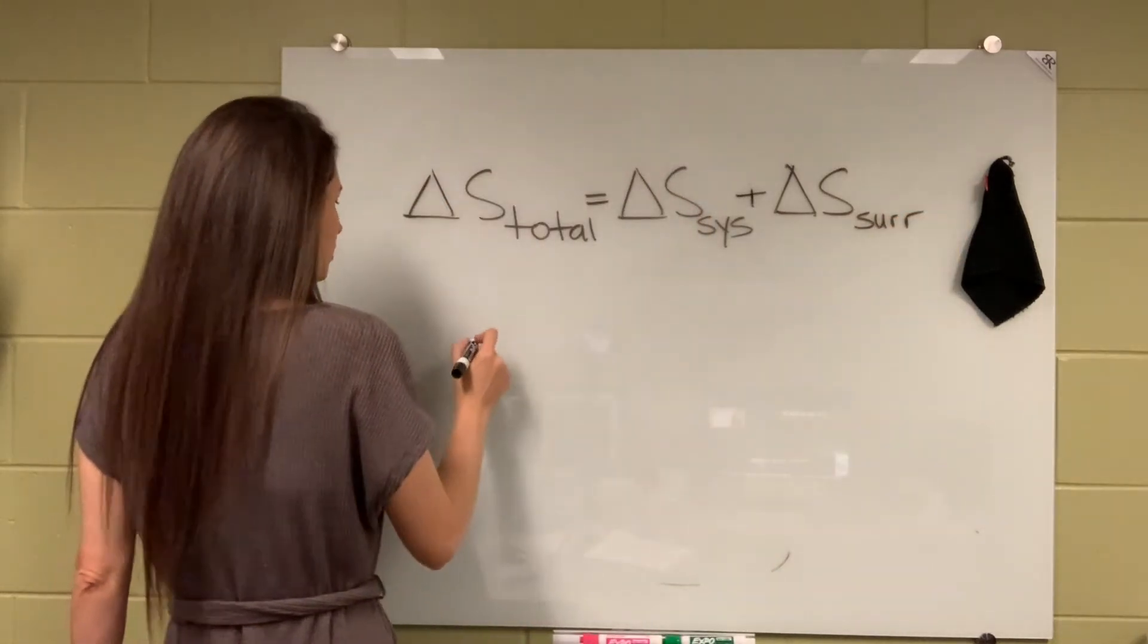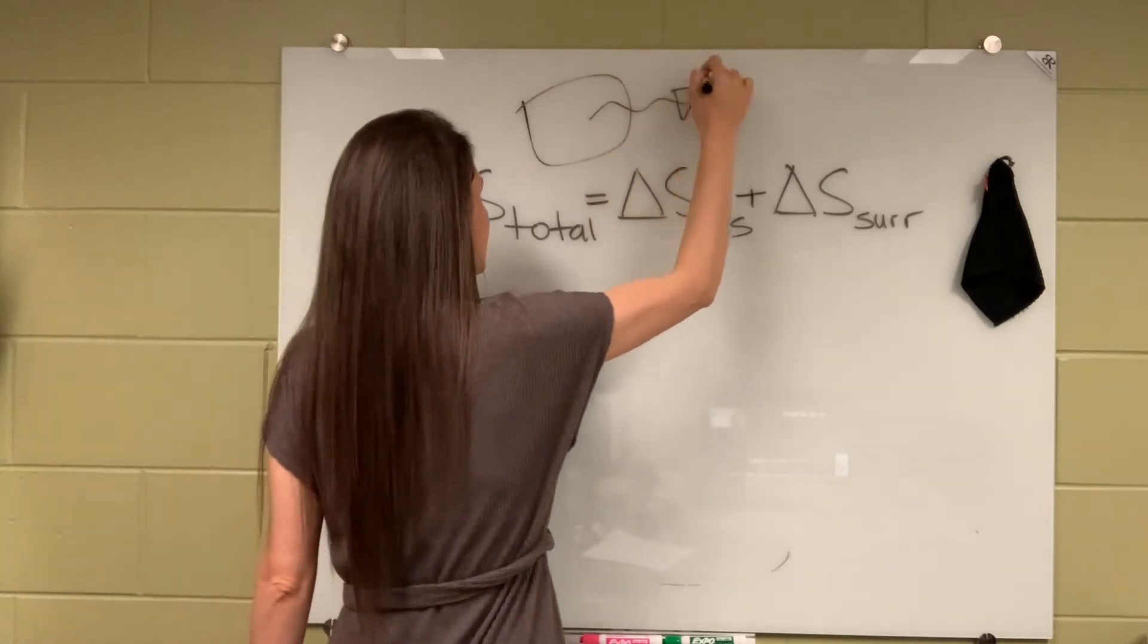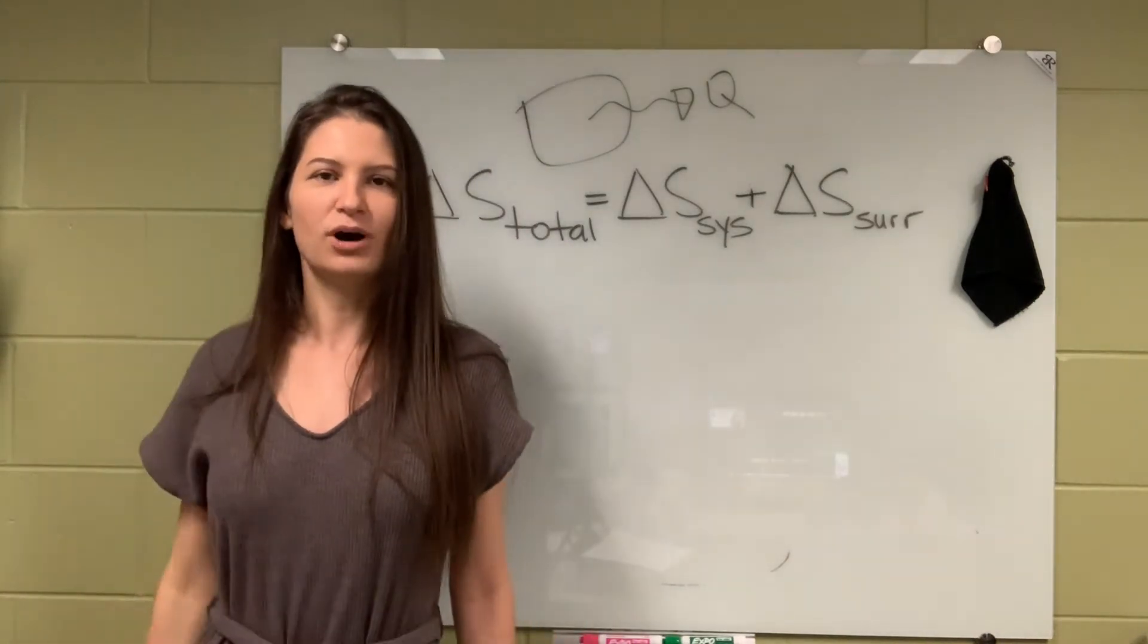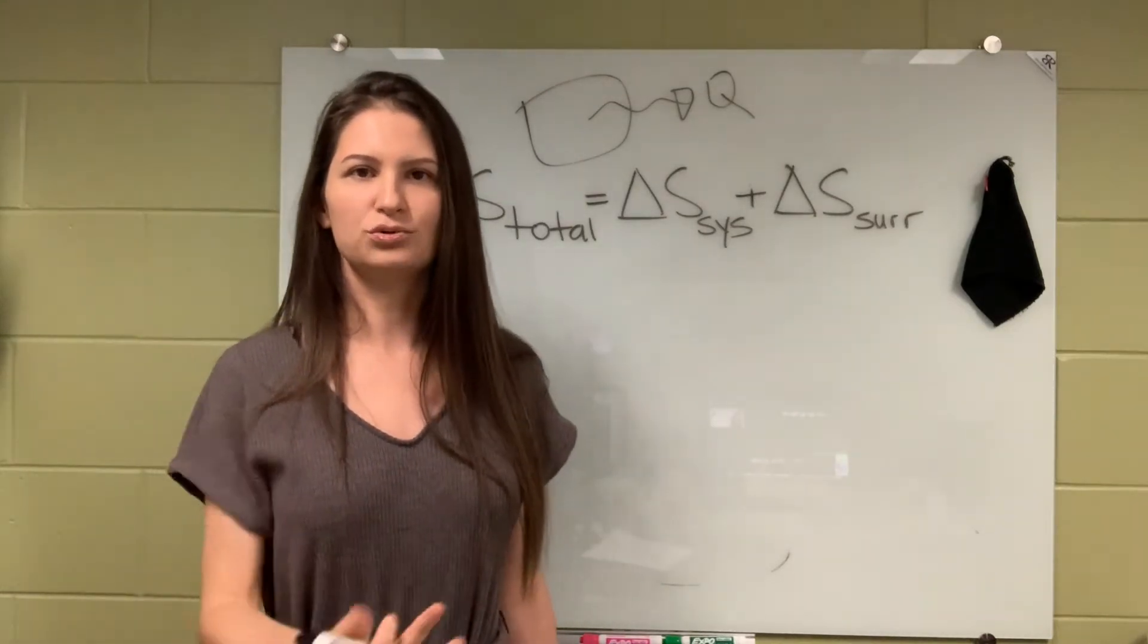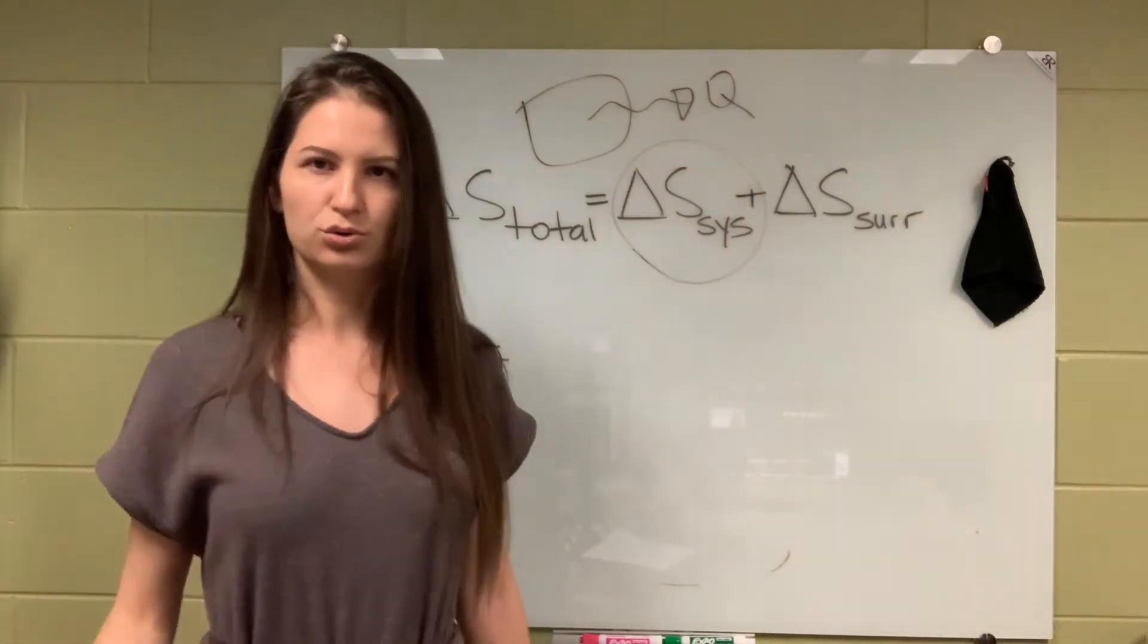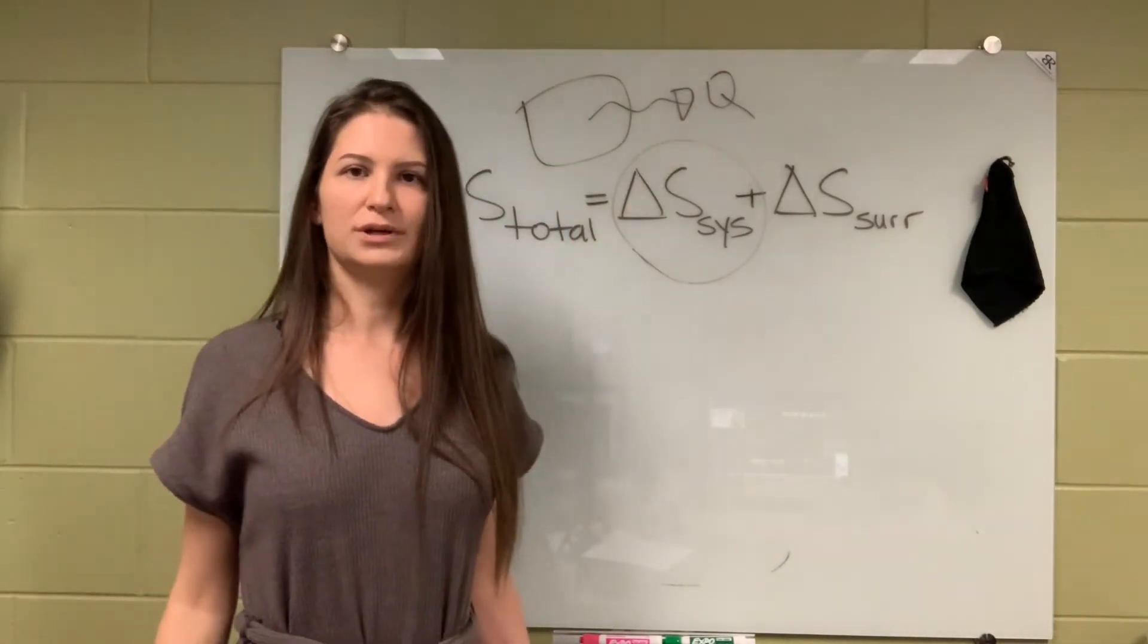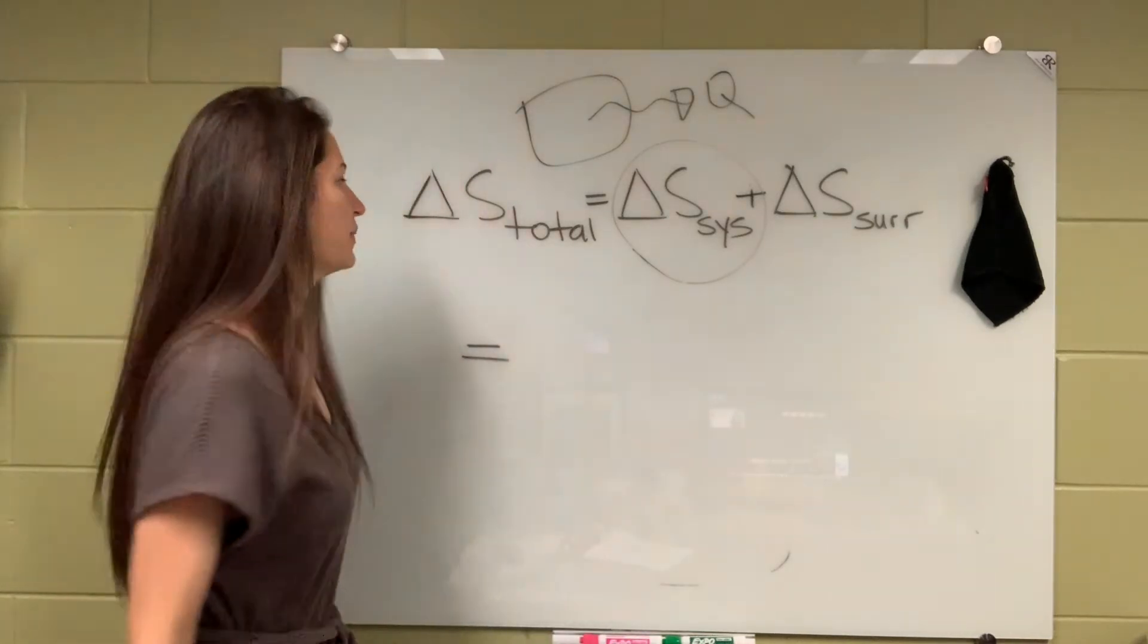You need to understand when your system is losing heat, you expect your system's entropy to increase or decrease. Yes, you are correct, you expect your system's entropy to decrease. So this term has to be negative because the heat carries entropy with it. So when it goes out of our system I expect this term to get decreased, so it has to be negative.